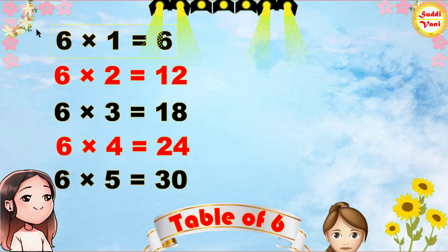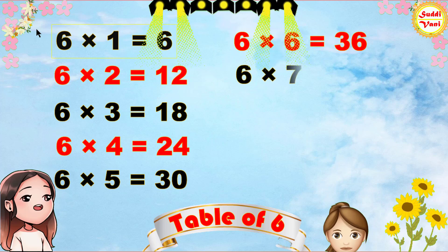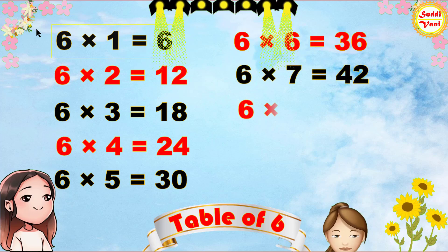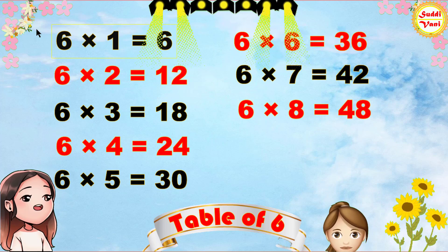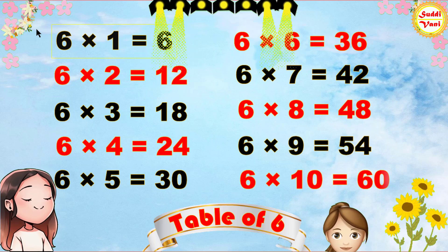6 5s are 30, 6 6s are 36, 6 7s are 42, 6 8s are 48, 6 9s are 54, 6 10s are 60.